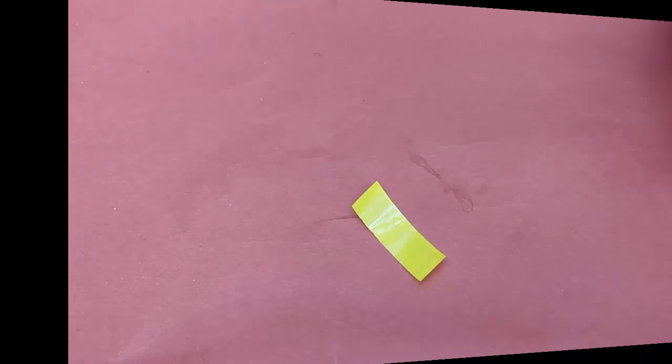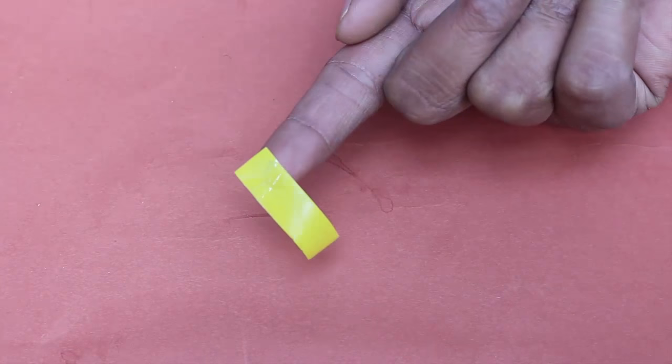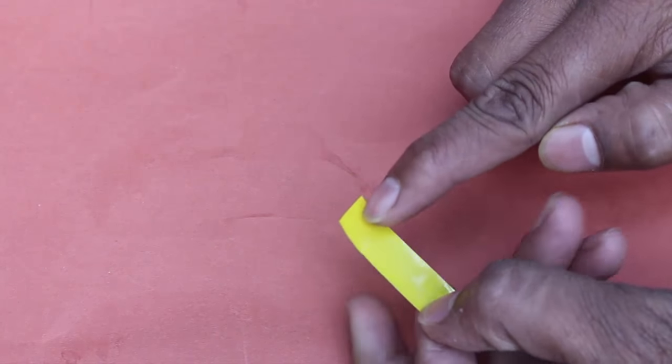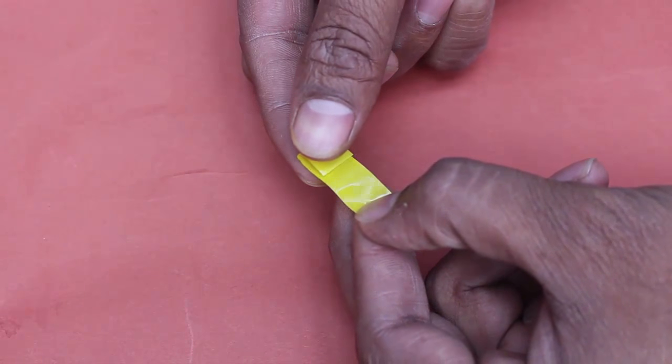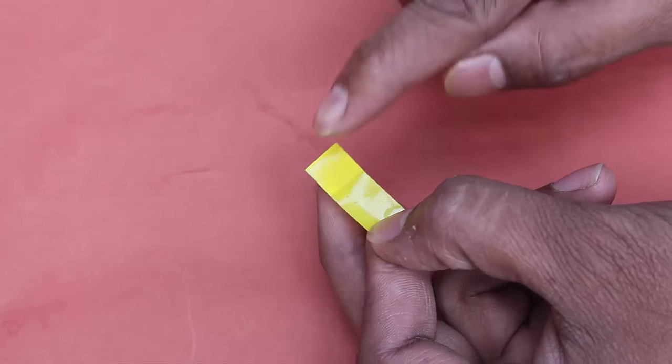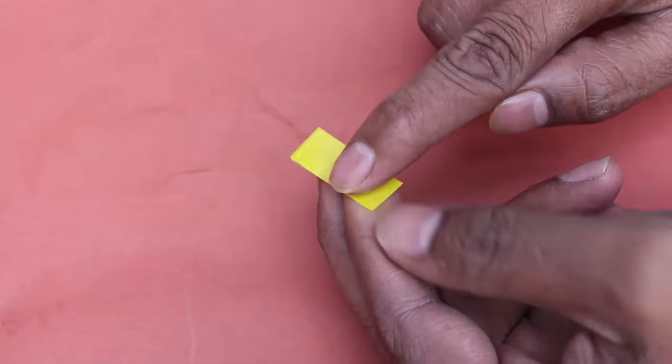These tape flaps will open and close and they will act like suction valves. They will allow air to pass only in one direction.